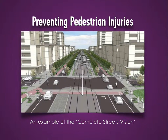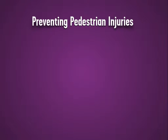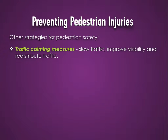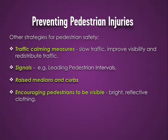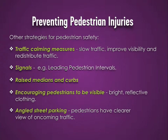This illustration depicts an example of the complete streets vision. The streetscape provides accommodation not only for cars, but for transit, bicyclists, and pedestrians. Other strategies that can improve pedestrian safety include traffic calming measures that slow traffic, improve visibility, and redistribute traffic around target areas; signals such as leading pedestrian intervals; the addition of raised medians and curbs; encouraging pedestrians to be visible with bright clothing during the day and reflective clothing at night; and angled street parking to ensure pedestrians see oncoming traffic before stepping into the road.